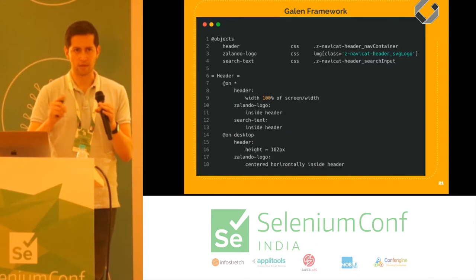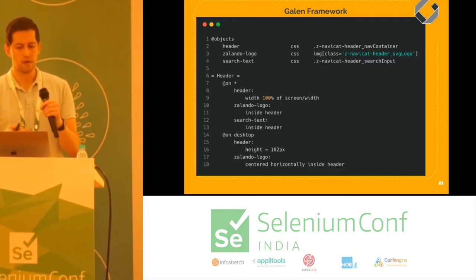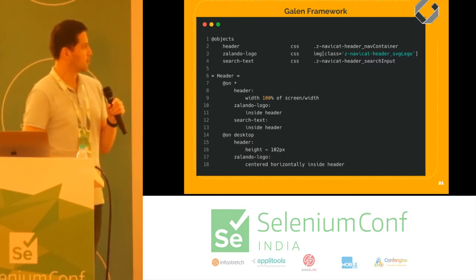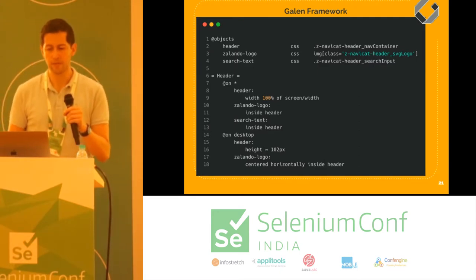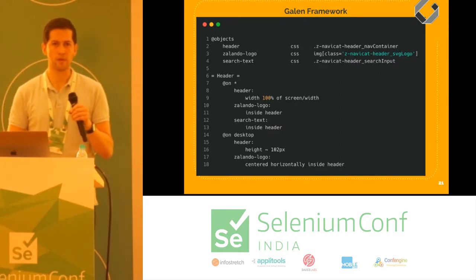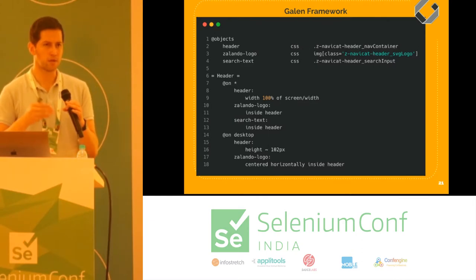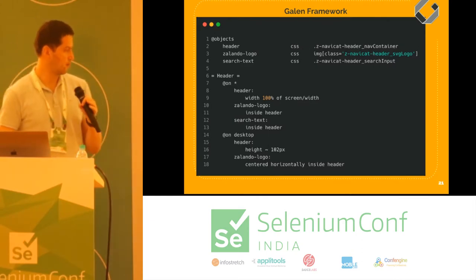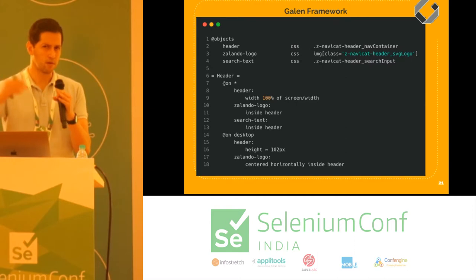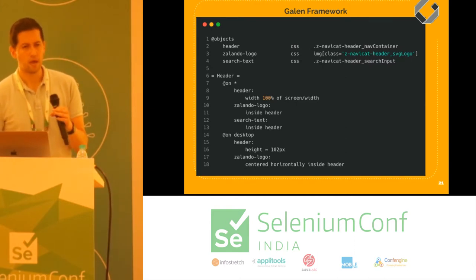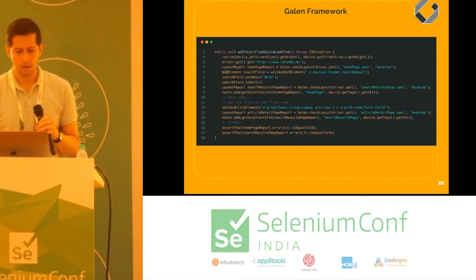The Galen framework works conceptually pretty simply. You specify the objects you want to use in your test with a CSS locator, then specify relations between those elements. For example, with the star on line 7, these rules apply to all elements always — the header should always be as wide as the screen, the logo should always be inside the header, and the search text inside the header.